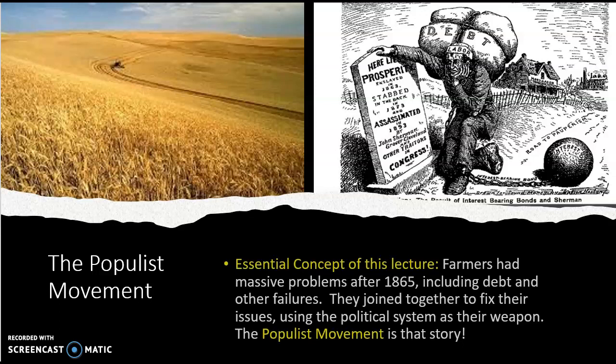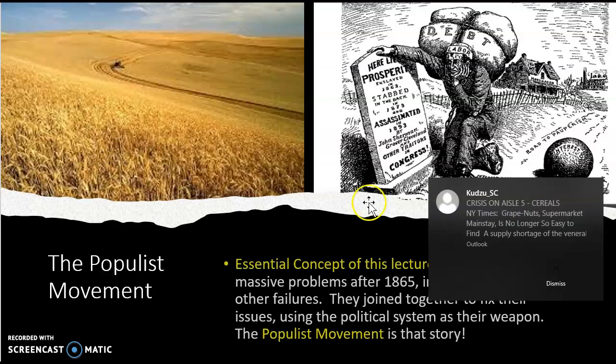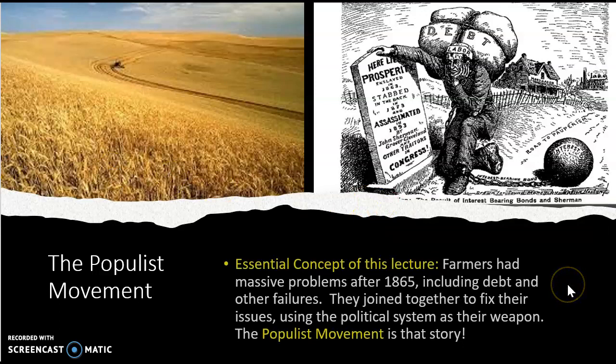What does anybody do in history when you have enough problems? You join together with other people with similar problems and you try to fix the issues. The big key to this populist movement is not only do they get together to try to fix issues, they're not sitting around just complaining — they're going to get into the political system. They're going to run people for local and state offices, politicians that are going to take up their cause. There will actually be a political party formed called the Populist Party.